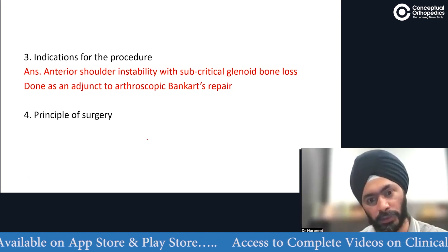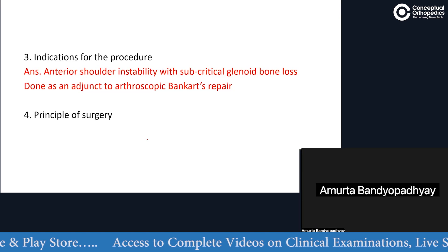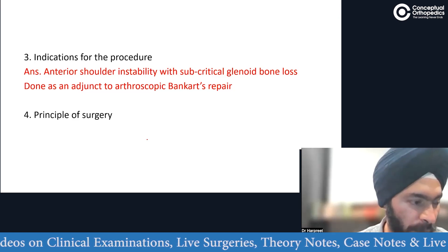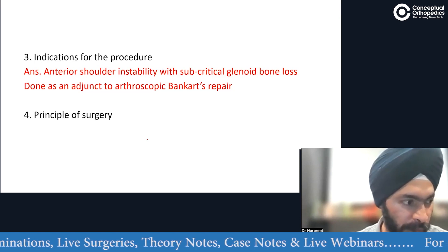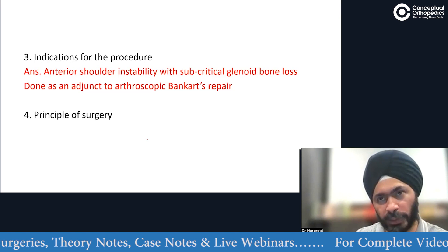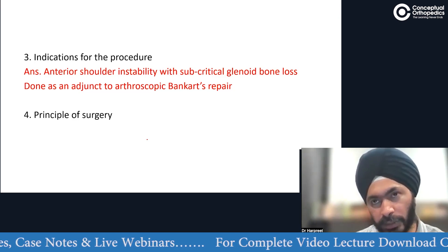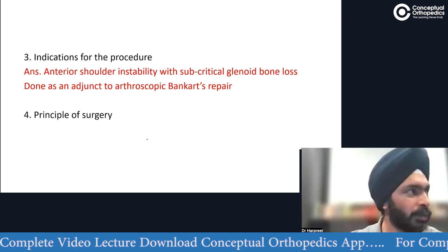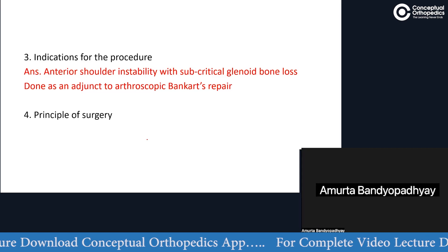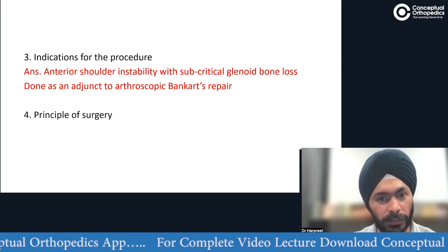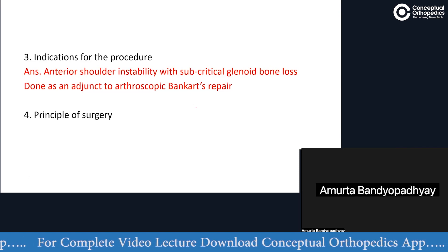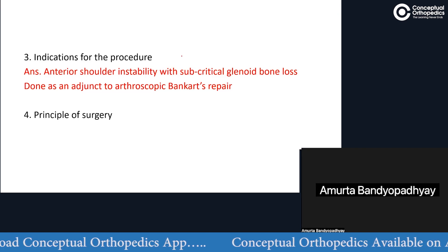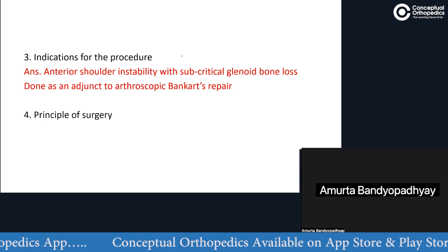It's always done as an adjunct to your arthroscopic Bankart repair. You do Bankart and then add the DAS. What is the principle — why do you want to add biceps tenodesis anterior to the glenoid after doing a Bankart? What other anterior instability shoulder procedures do you know? The Latarjet — and what do you do in Latarjet? We take the coracoid process and attach it to the anterior inferior portion of the glenoid bone loss.